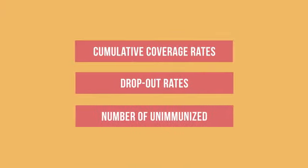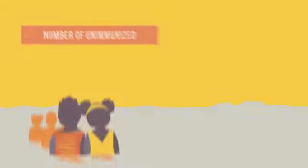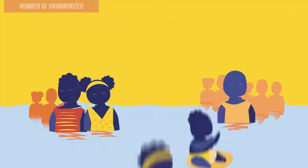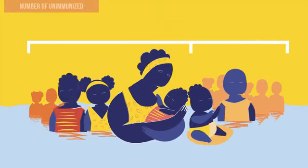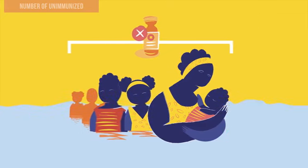To find the number of unimmunized individuals, you will take the total target population and subtract the number of doses administered for a specific vaccine dose, such as pentavalent 3 or the second dose of tetanus-toxoid-containing vaccine. The result is the number of infants or pregnant women who have not been immunized for that particular vaccine dose.